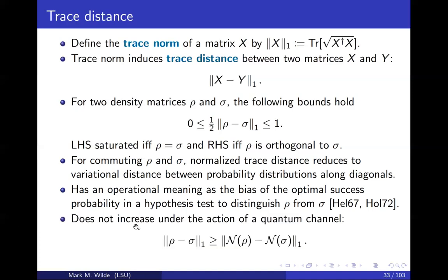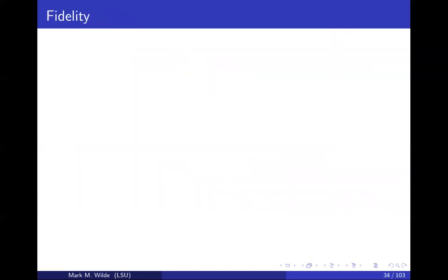And another important thing is that if you act with the same channel on rho and sigma, then the trace distance does not increase. That's the kind of property you would want for any measure of distinguishability between quantum states.